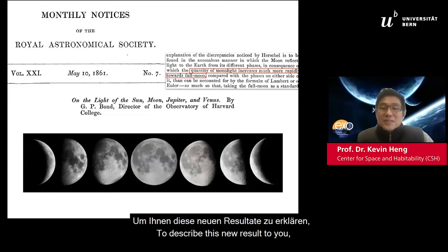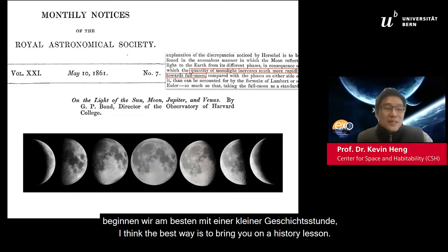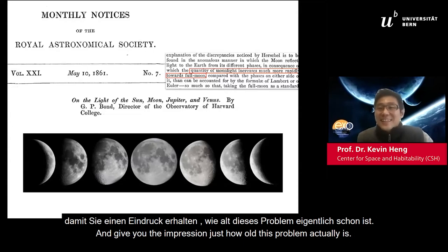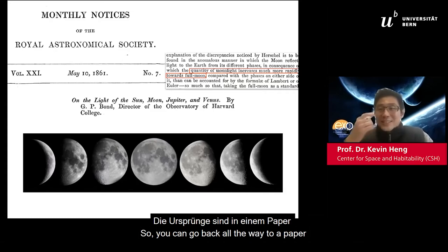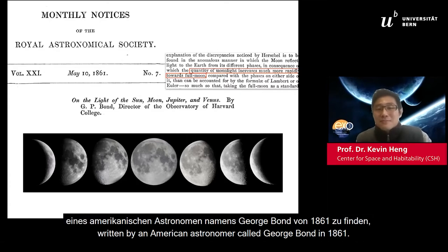To describe this new result, the best way is to bring you on a history lesson and give you the impression of just how old this problem actually is. That was part of the reason I was attracted to working on it. It goes back all the way to a paper written by an American astronomer called George Bourne in 1861.